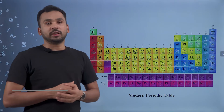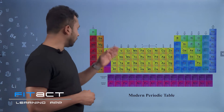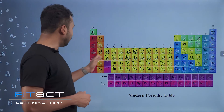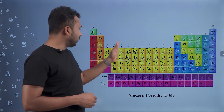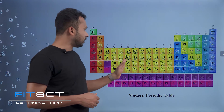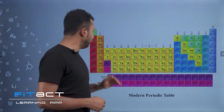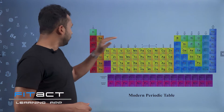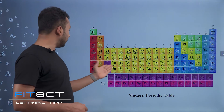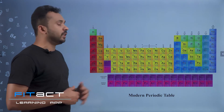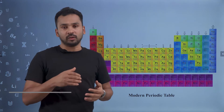Let us count the periodic table. 1, 2, 3, 4, 5, 6, and 18 groups. And 1, 2, 3, 4, 5, 6, 7 — and 7 periods.